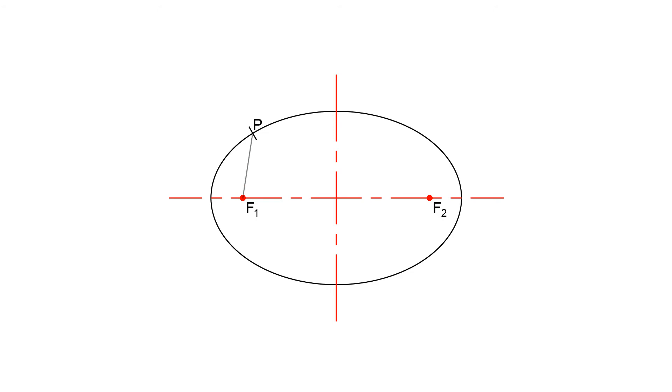We start by drawing a line from each focal point to point P. Then, bisect the angle formed by the two lines. If you need help bisecting an angle, please watch my other video in the description below.